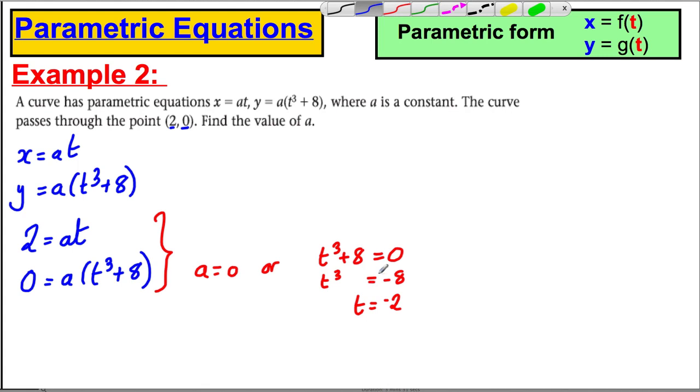Now, if t is negative 2, in this case here, you could substitute in t as negative 2 in here, and you could say that therefore 2 equals a multiplied by negative 2, and therefore you could say a is therefore equal to negative 1.